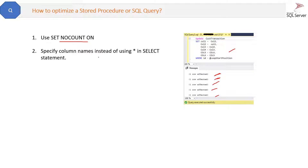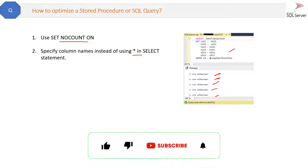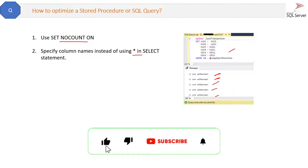The second way to optimize a stored procedure is to specify column names instead of using asterisk in a SELECT statement. Avoid SELECT * FROM — instead write SELECT column_a, column_b FROM like this.